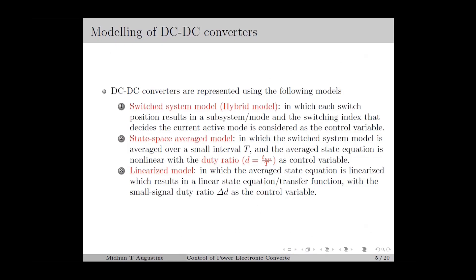As we discussed in the previous lecture, mathematical models are required for analyzing the behavior of the converter and designing controllers for adjusting the behavior. Mathematical models are usually in the form of differential equations that describe the dynamics of the physical variables in the system. The mathematical models of power converters can be represented in a number of ways. The first is the switcher system model, which is the most direct model. It consists of a number of subsystem models and a switching index that decides switching between subsystems. In the state-space average model, we average the system dynamics over a small period and use the duty ratio as the controlled variable.